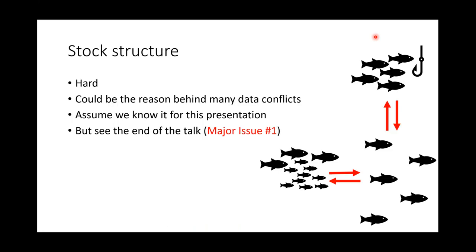Stock structure is really hard, partly because we don't have a lot of tagging data or genetic data to determine it. Stock structure could also be part of the reason for a lot of the data conflicts we see in stock assessment. For example, there might be multiple interacting subpopulations within the area being assessed with not full mixing, causing things like local depletion. Or you could be assessing only part of the stock, with interactions coming from outside the area. In the rest of the presentation I'll assume we know the stock structure, but I'll discuss it as one of the first major issues to be dealt with at the end of the talk.